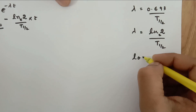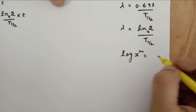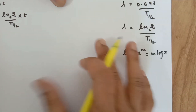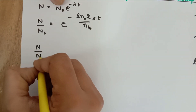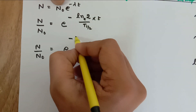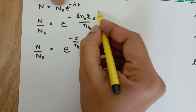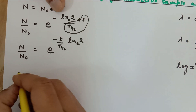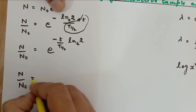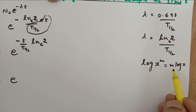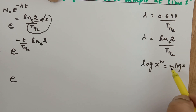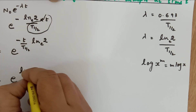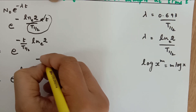Now a very basic property of logarithms: log x to the power m can be written as m log x. Whatever is the power over here, it can be pulled in front. We are going to use this property here. So rearranging the expression, n upon n₀ equals e raised to the power ln 2, raised to the power minus t upon t-half, since the entire minus t upon t-half behaves as m and 2 is x.